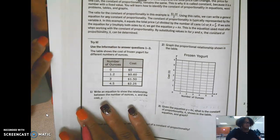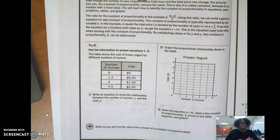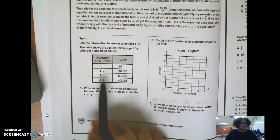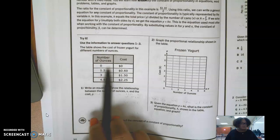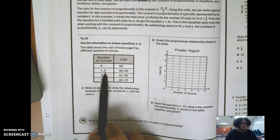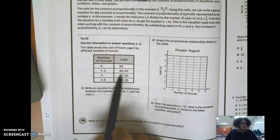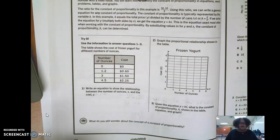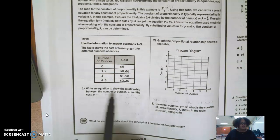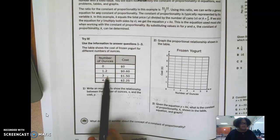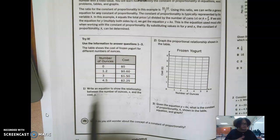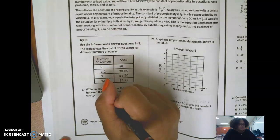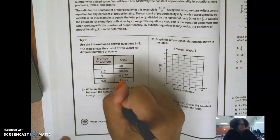This is a lot to read here. So we're just going to jump into the try it and go for it. So it says use the information to answer questions 1 through 3. The table shows the cost of frozen yogurt for different numbers of ounces. So obviously, if you're not buying any ounces of frozen yogurt, then you're not paying anything. Here it says 1.2, here it says 60 cents. Here, this says 3 ounces cost $1.50 and this says 4.5 ounces cost $2.25.